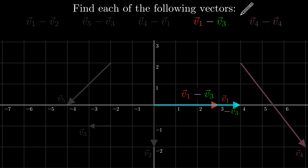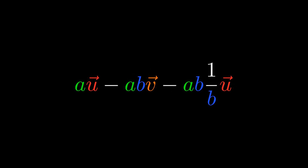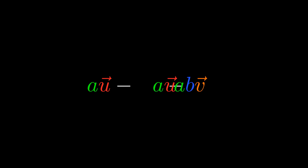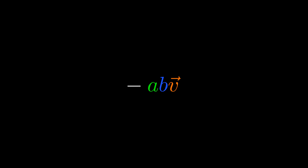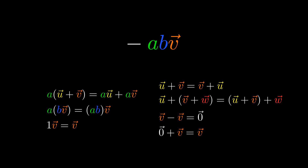Finally, let's do v4 minus v4. We flip v4 and put it on the end of v4. The difference starts and ends at the same place — like the last addition problem, the answer is the zero vector. Now that we know how to add and subtract vectors and multiply vectors with scalars, we can do algebra with them. However, in doing such simplification, we assumed that all of the properties that hold for numbers are also true for vectors. How do we know that? Just how similar is the algebra of numbers to the algebra of vectors? We'll answer that in the next video.